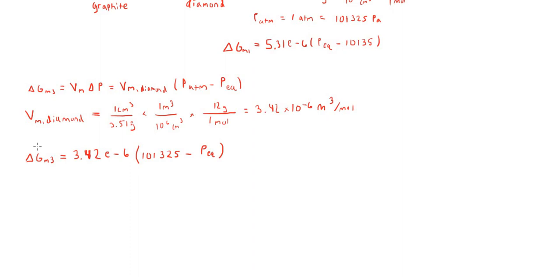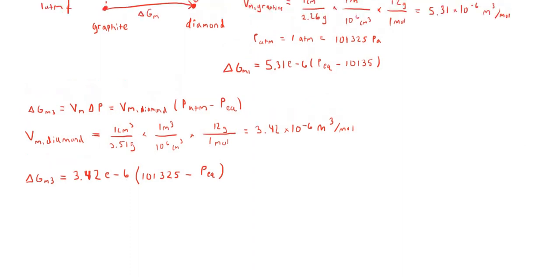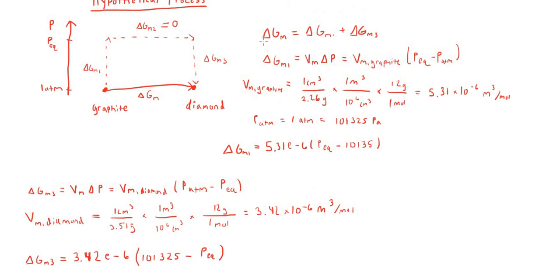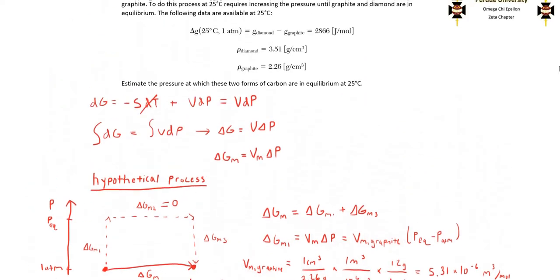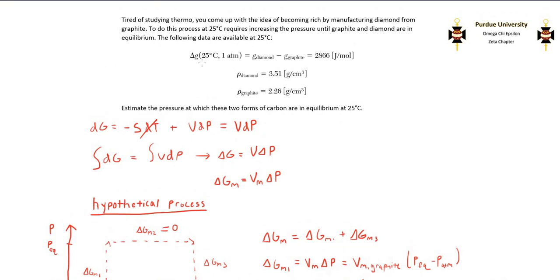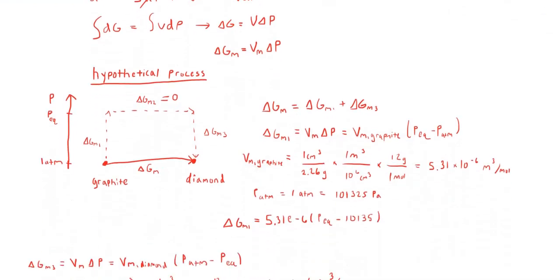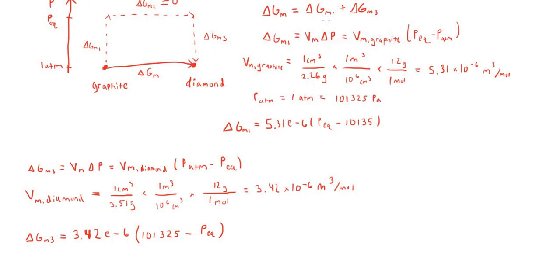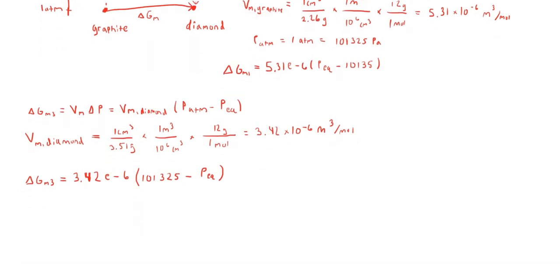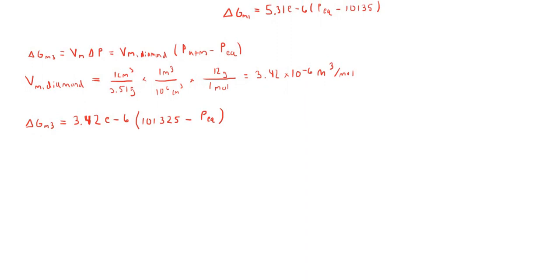Now that we have both ΔG_m3 and ΔG_m1, all in terms of P_eq, we can insert them into this equation, where the total change in molar Gibbs free energy of the process was given to us earlier. At a fixed temperature of 25 degrees Celsius and at 1 atmosphere, ΔG_m is going to equal 2866 joules per mole. If we plug this in to the equation, and the two expressions we have for ΔG_m1 and ΔG_m3, we'll get one equation with the only unknown as equilibrium pressure.